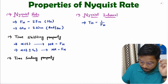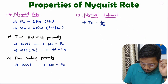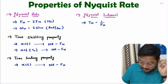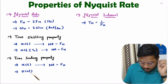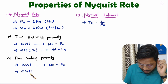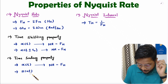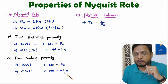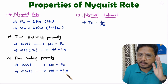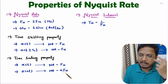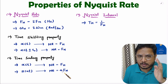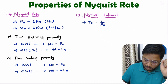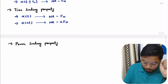The second property is based on the time scaling property. If we have original signal x(t) with Nyquist rate fn, then after time scaling the Nyquist rate will change. If we scale the signal by factor a, giving x(at), then the Nyquist rate will be a times fn. Multiplying the scaling factor a with time increases the frequency of the signal by a times, so the Nyquist rate becomes a·fn.